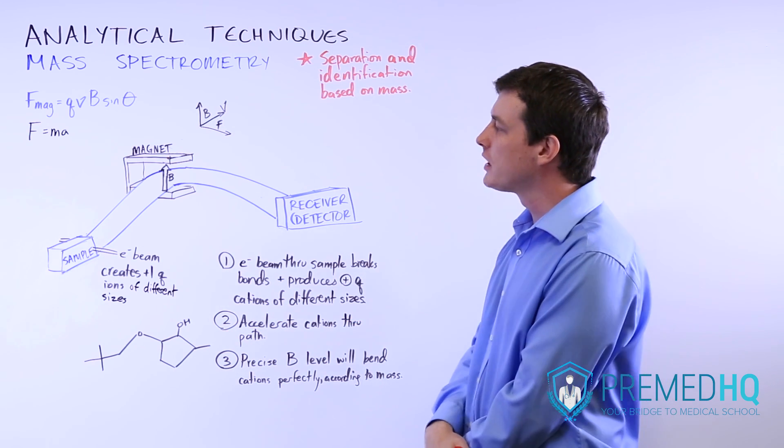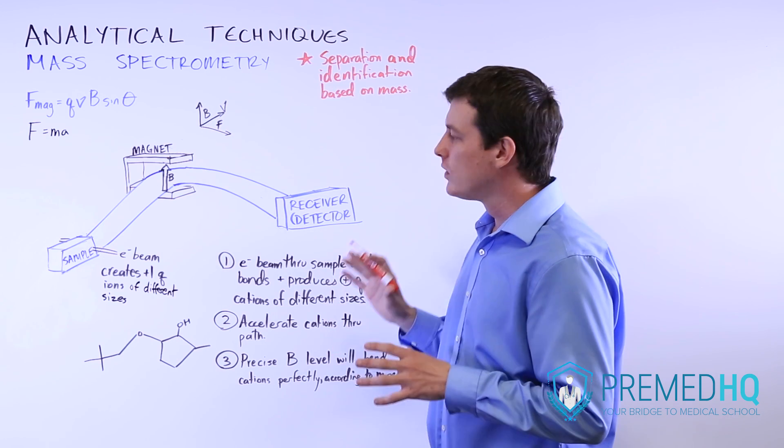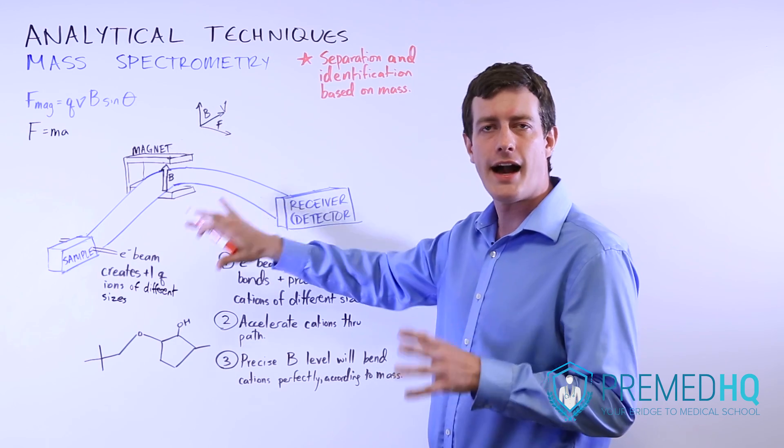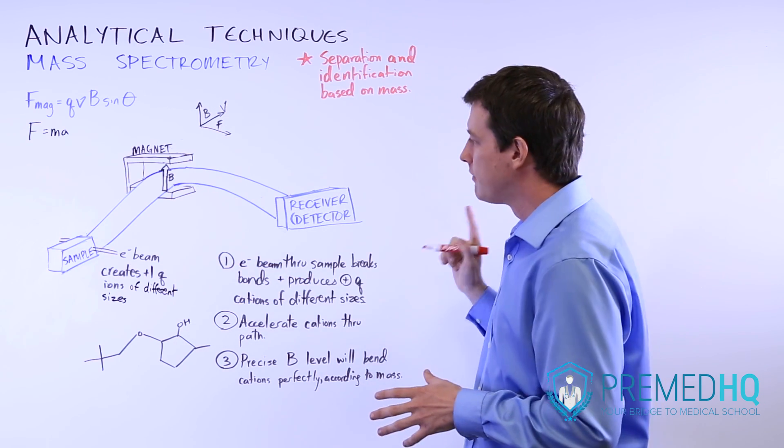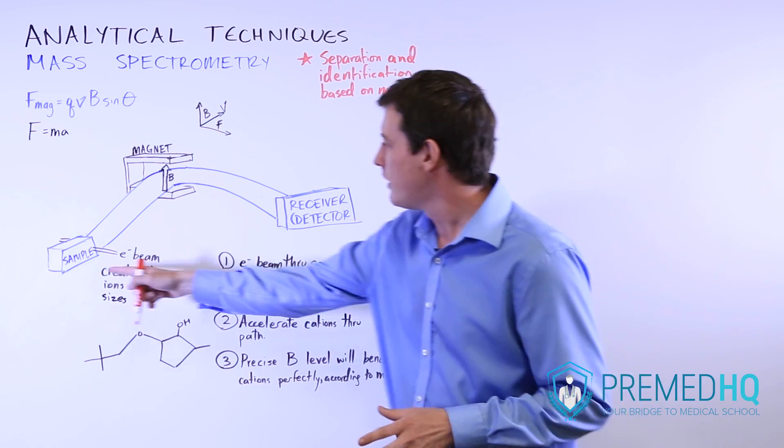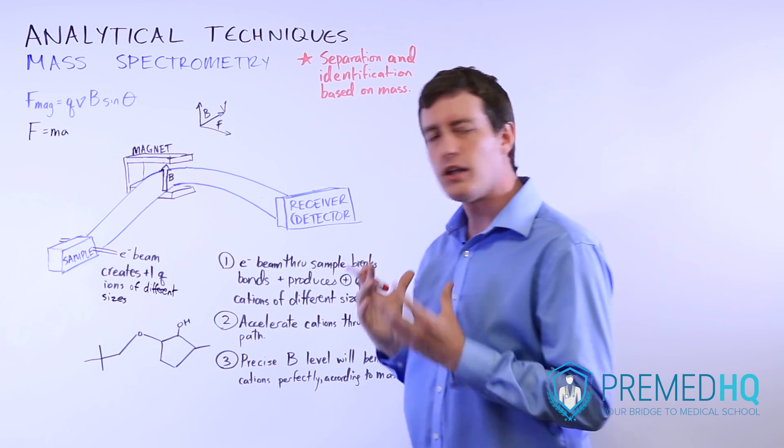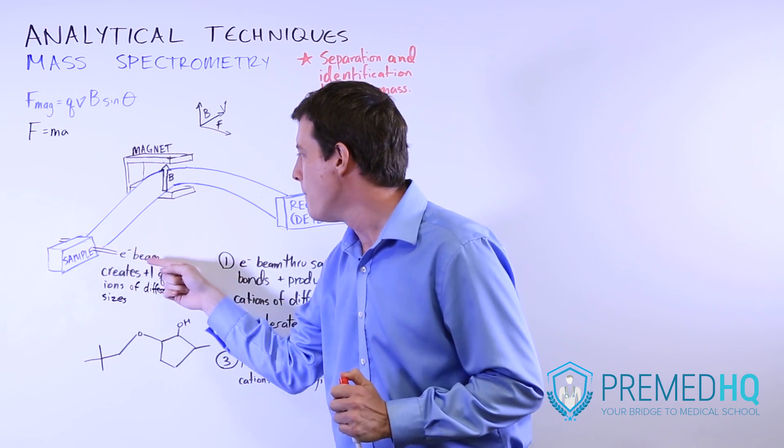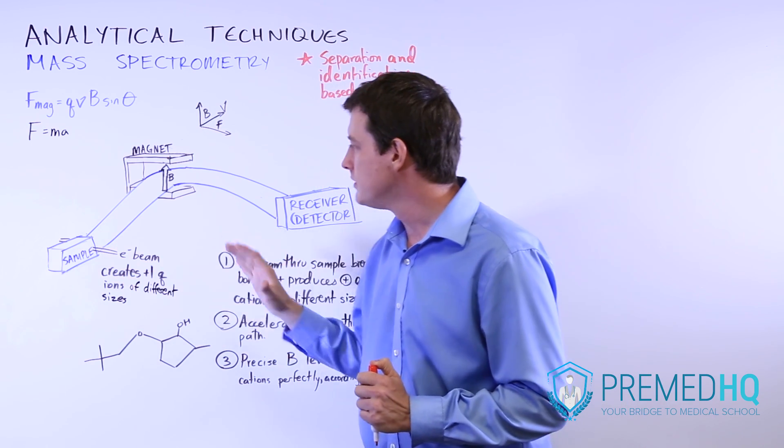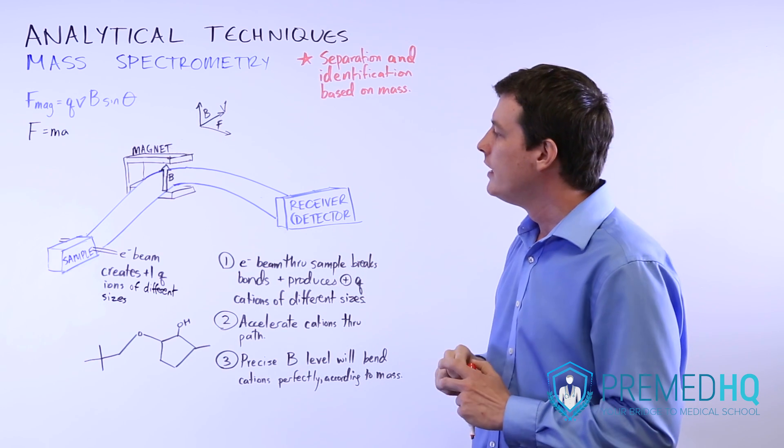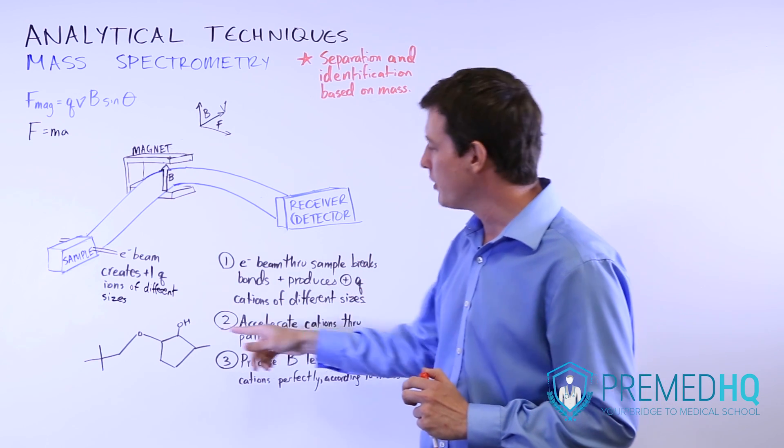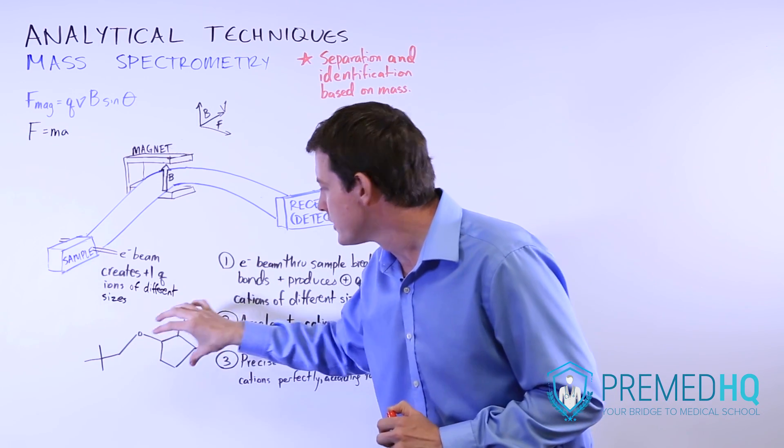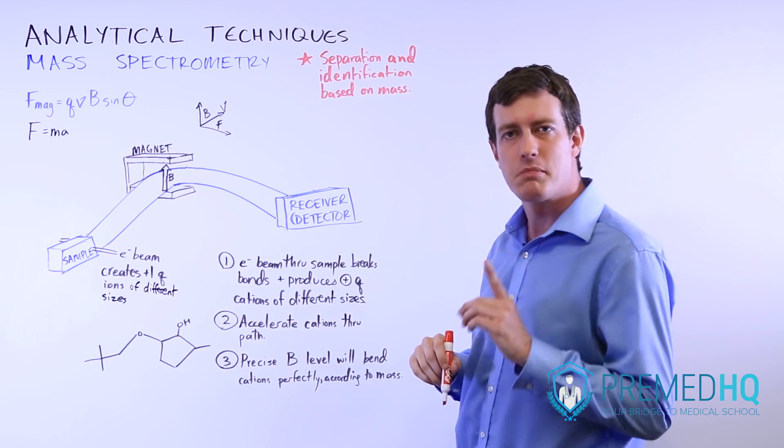Before we go into interpreting mass spec data, we'll go through and understand the theoretical basis of how mass spectrometry works. The first step is when you have a sample containing a lot of different molecules of your unknown, you shoot an electron beam through that sample, a fairly concentrated electron beam. That will break bonds and produce different components or different pieces with a charge of plus one.